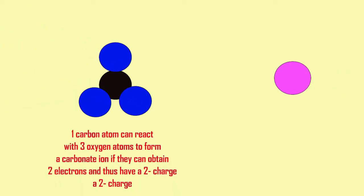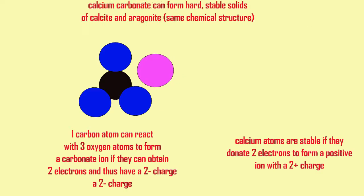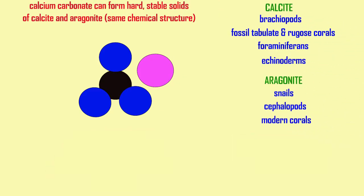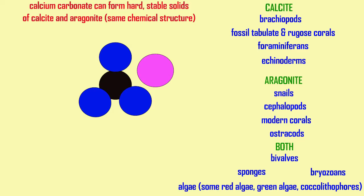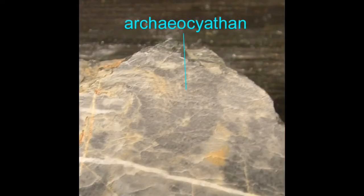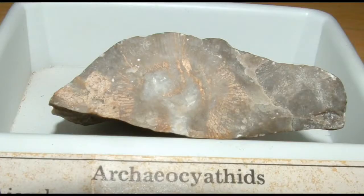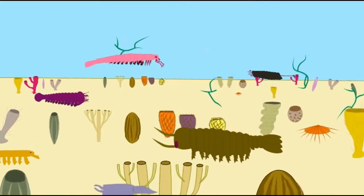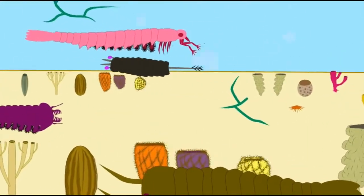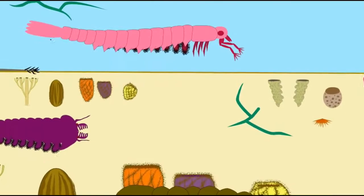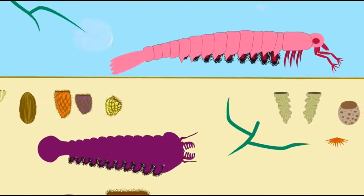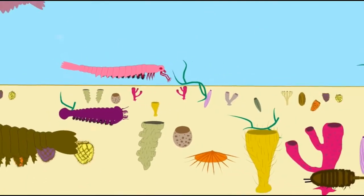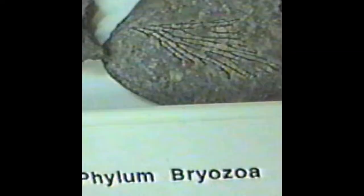Many other organisms may not be the major components of a limestone but nevertheless produce calcium carbonate which contributes to its formation. This would include sponges — both groups alive today and extinct sponges such as the archaeocyathids in the Cambrian period and the stromatoporoid sponges.